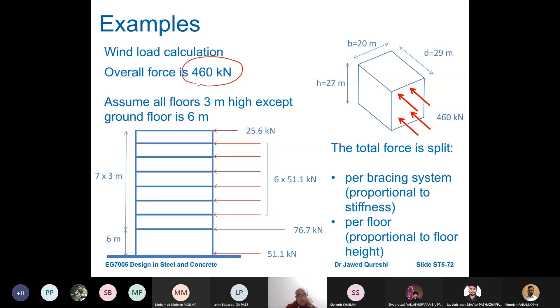Now assume all floors have 3 meter high except the ground floor which is 6 meter. So we have seven floors above and then the bottom floor is 6. Seven times 3 is 21, plus 6 is 27, giving overall height of the building. The force is split per bracing system proportional to the stiffness of the building and per floor proportional to the height. Please have a look at earlier slides to see how we worked out these forces of 460.